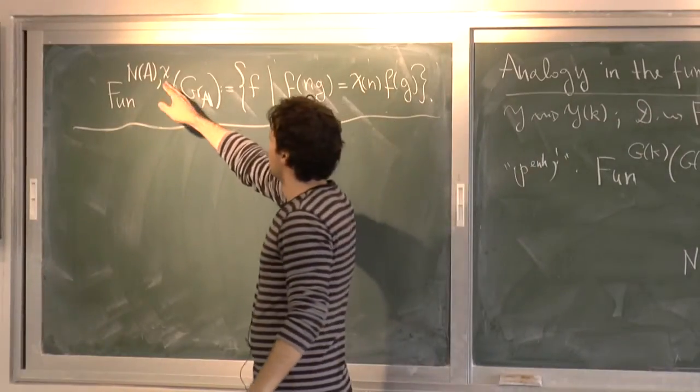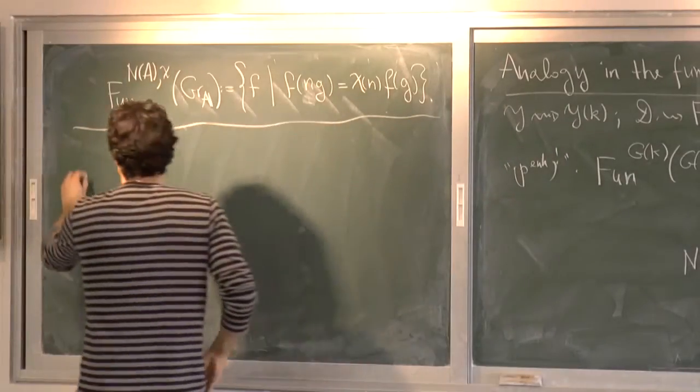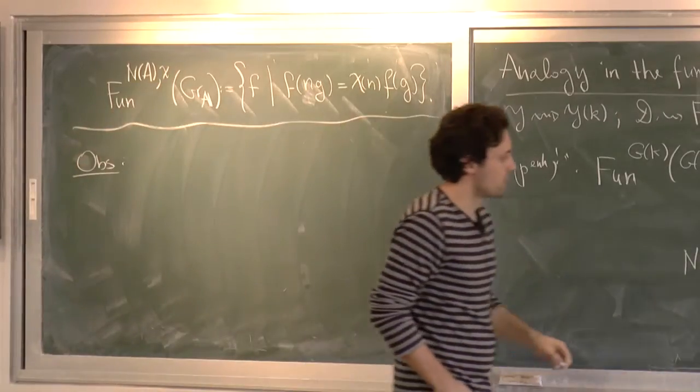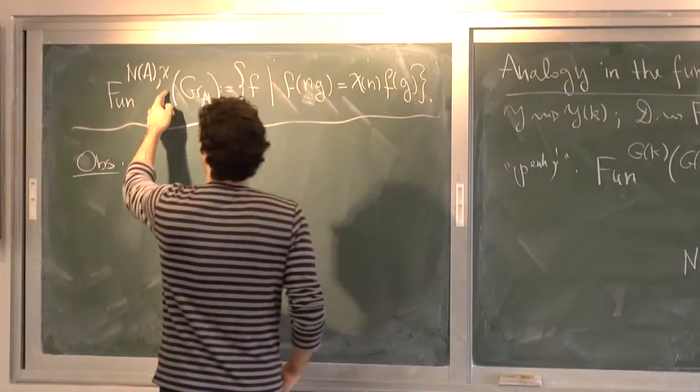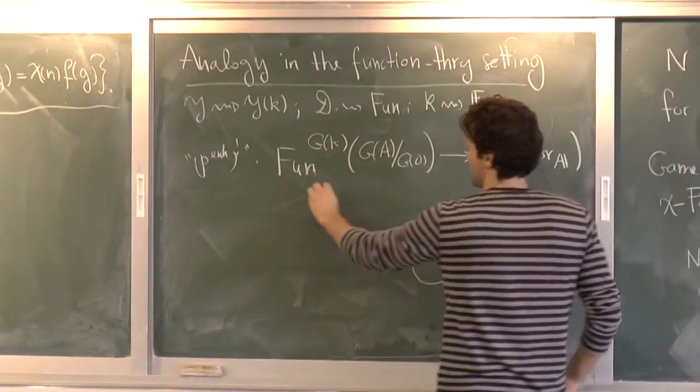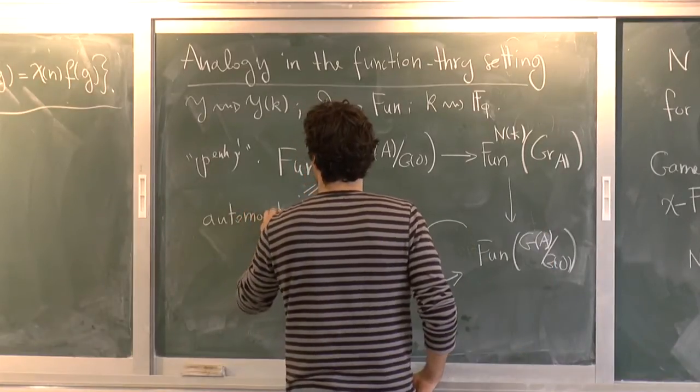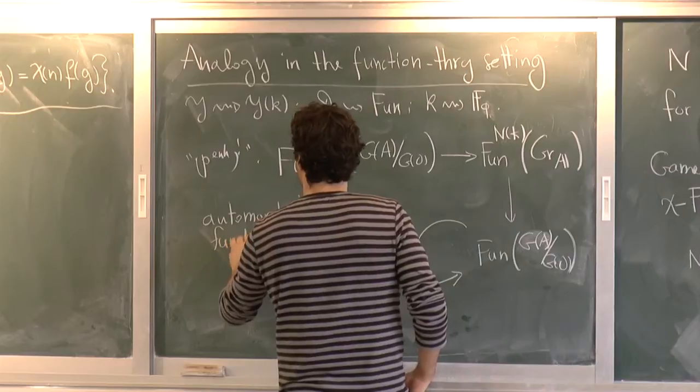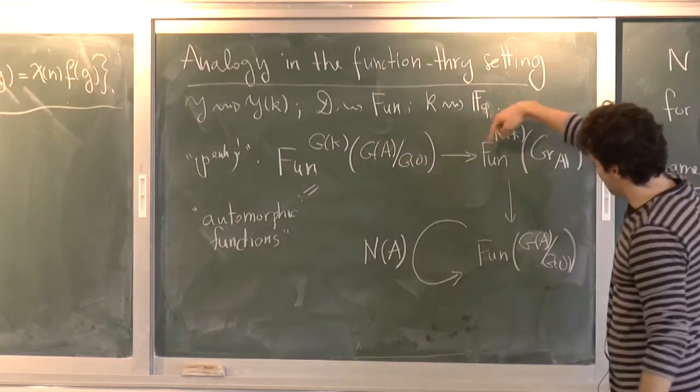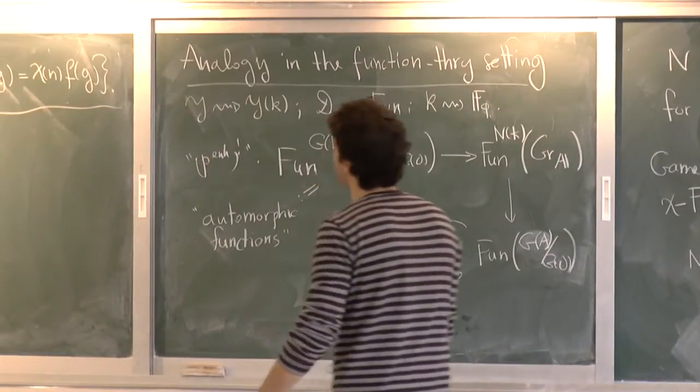So now, as chi varies, I want to study these spaces. And so first observation is that I don't need all of the characters of the adeles, because I'm only interested in this space. Let me give it a name. Automorphic functions. I'm only interested in this space, and this diagram tells me that any- It's not N minus 1. Where is N minus 1?